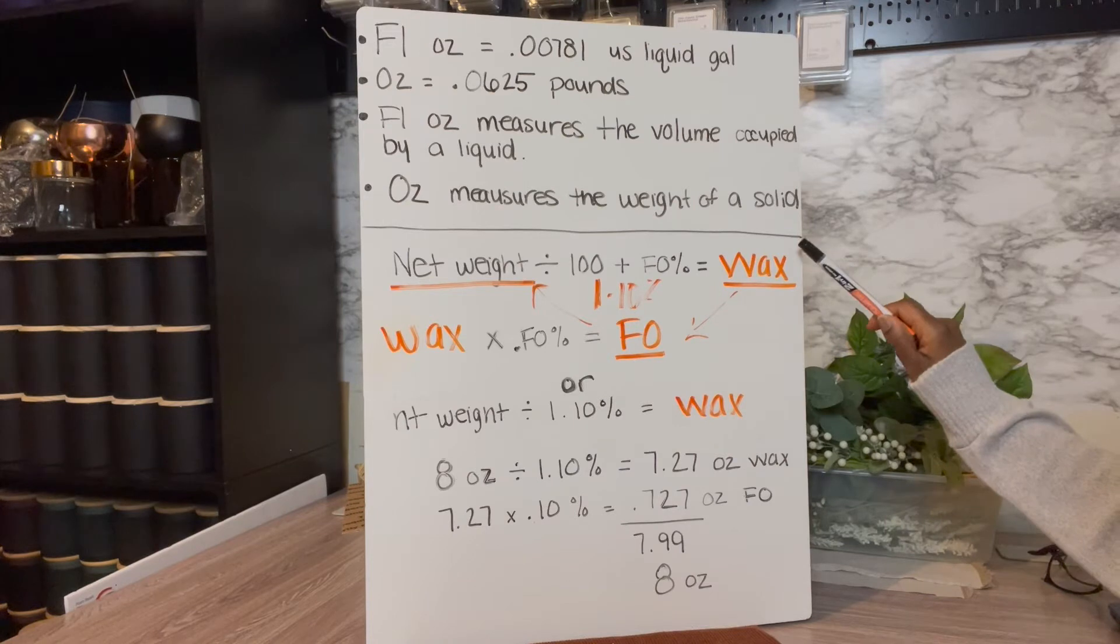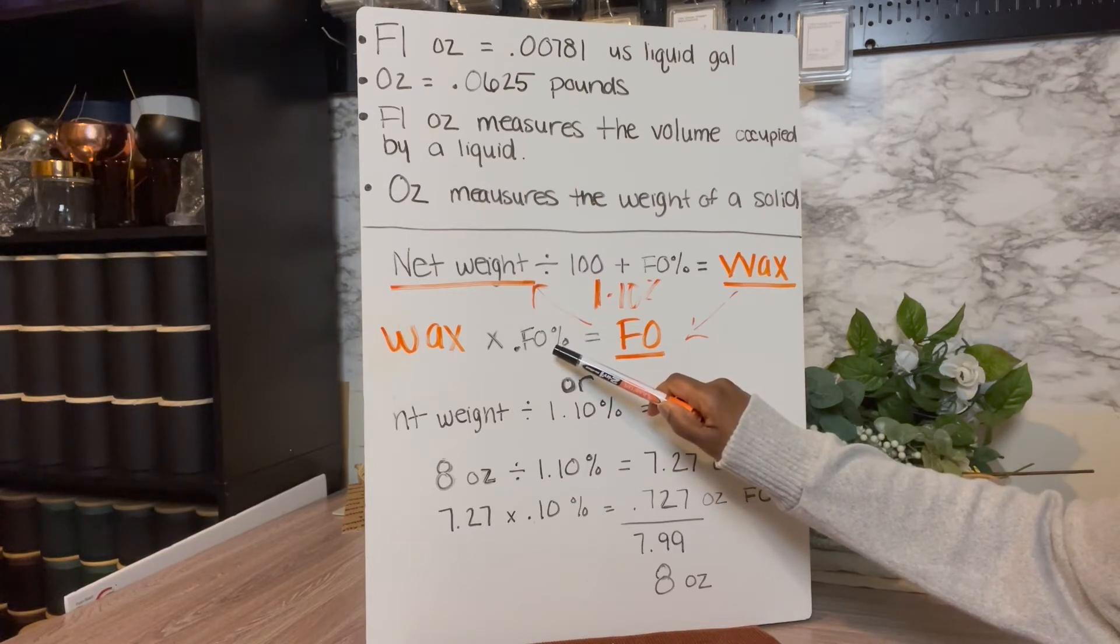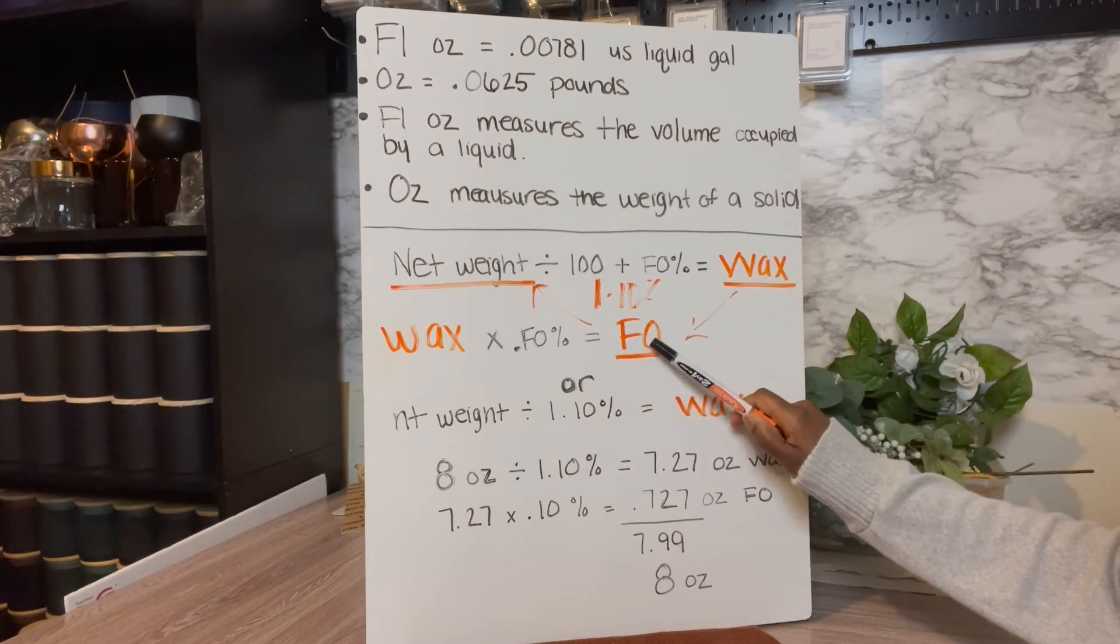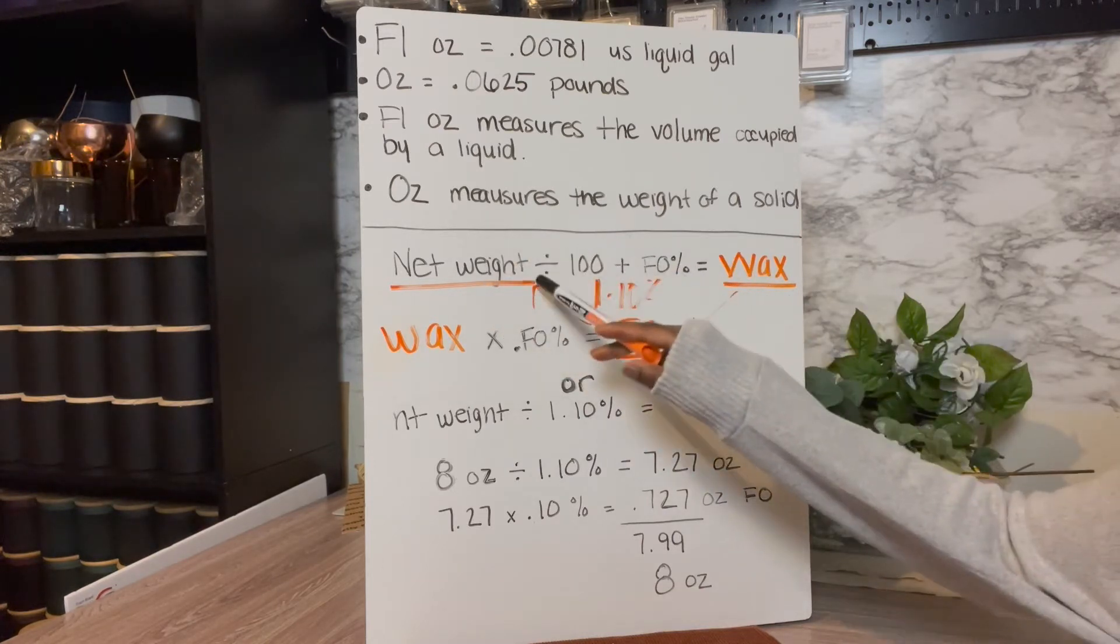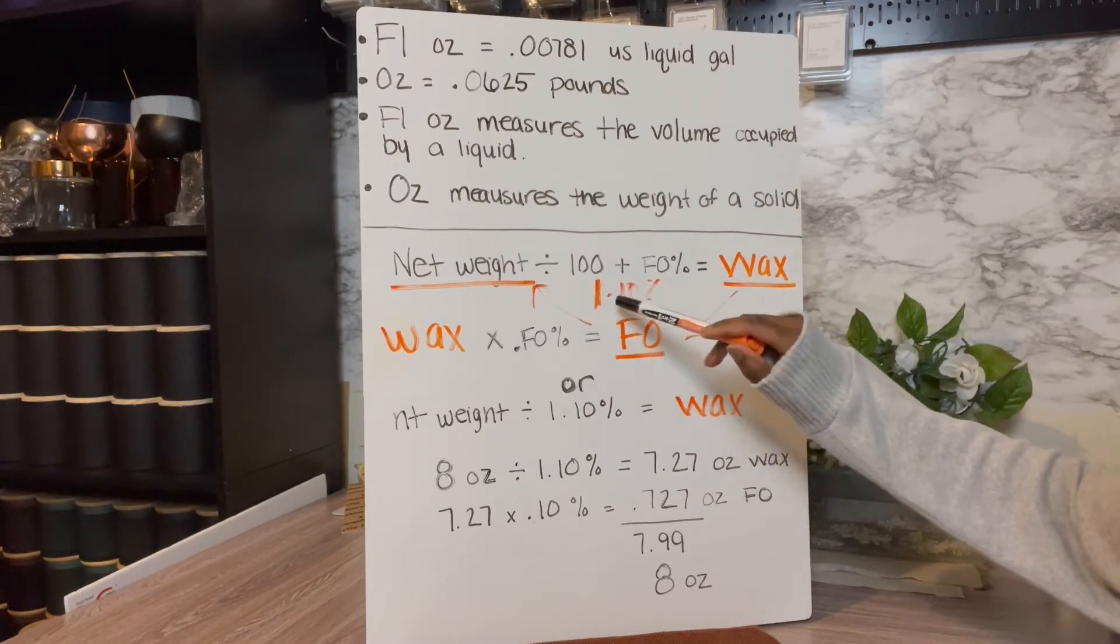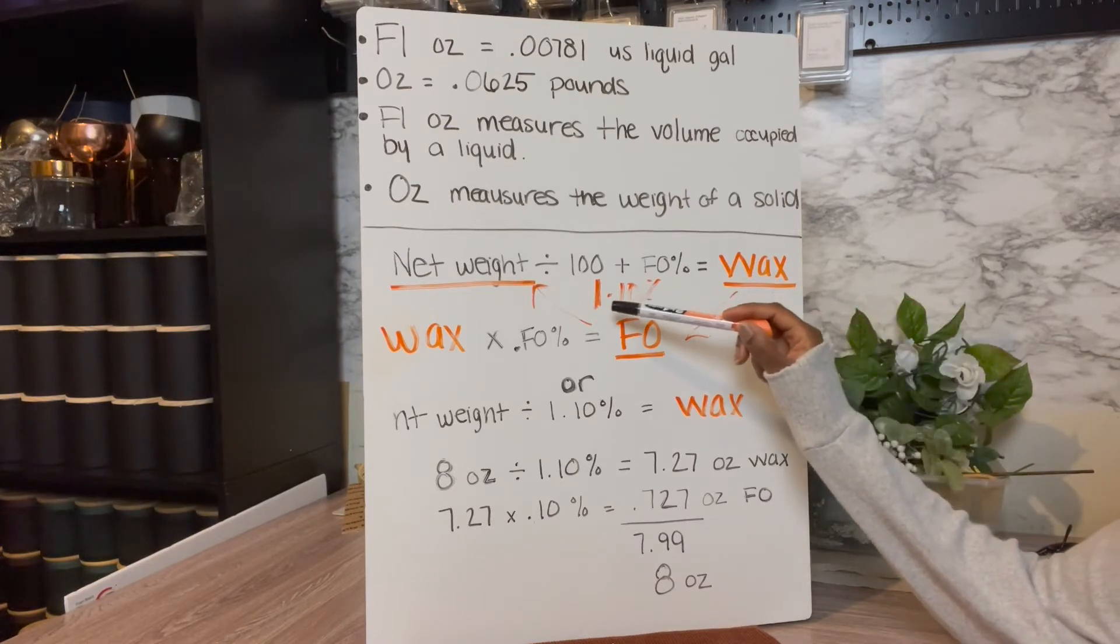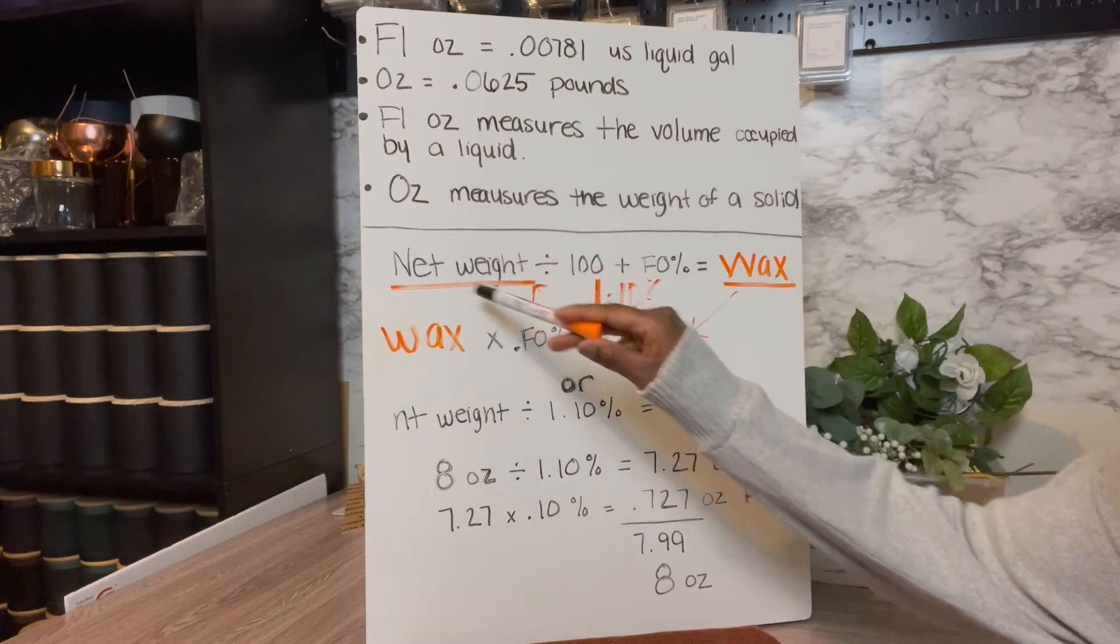So then once you figure out your wax, you're going to take your wax, multiply it by your fragrance oil percentage. And that's going to equal your fragrance oil load. When you get your fragrance oil load, your wax plus your fragrance oil load should equal your net weight. So you should pretty much be starting from the beginning again. To break this problem down even a little further, you can add your 100 plus your fragrance oil percentage. So you're going to always do 1.10 or 1.12 for a 12% fragrance load and so on. If you're using 14%, it would be 1.14, 8%, 1.08. That just kind of breaks step one down a little bit further.